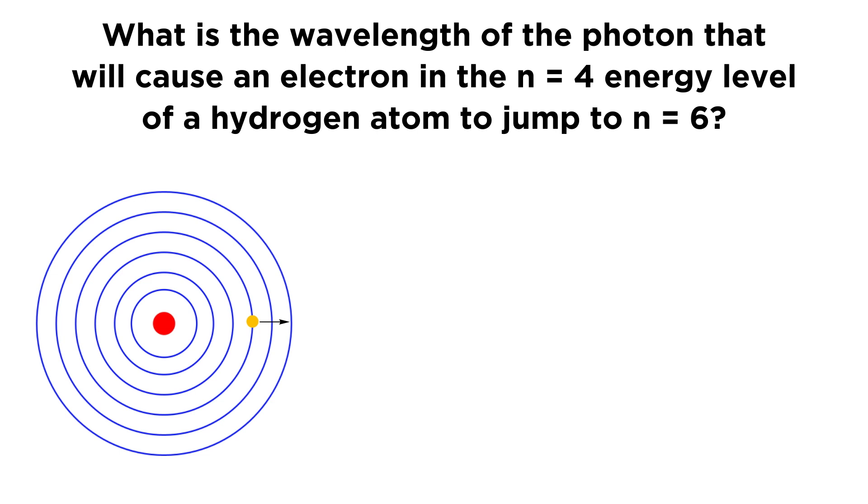We've depicted our hydrogen atom with one proton in the nucleus and an electron currently sitting in n = 4. The arrow signifies we're jumping up to n = 6. This happens because the electron absorbed a photon of a very particular energy to allow that transition, and we want to know the wavelength of that photon.